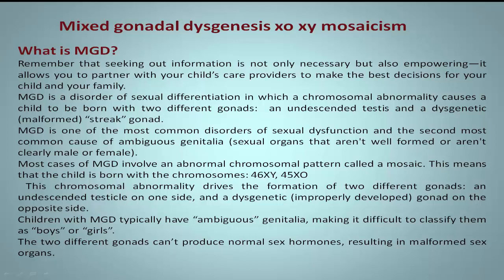Most cases of MGD involve an abnormal chromosomal pattern called a mosaic. This means that the child is born with the chromosomes 46XY/45XO.